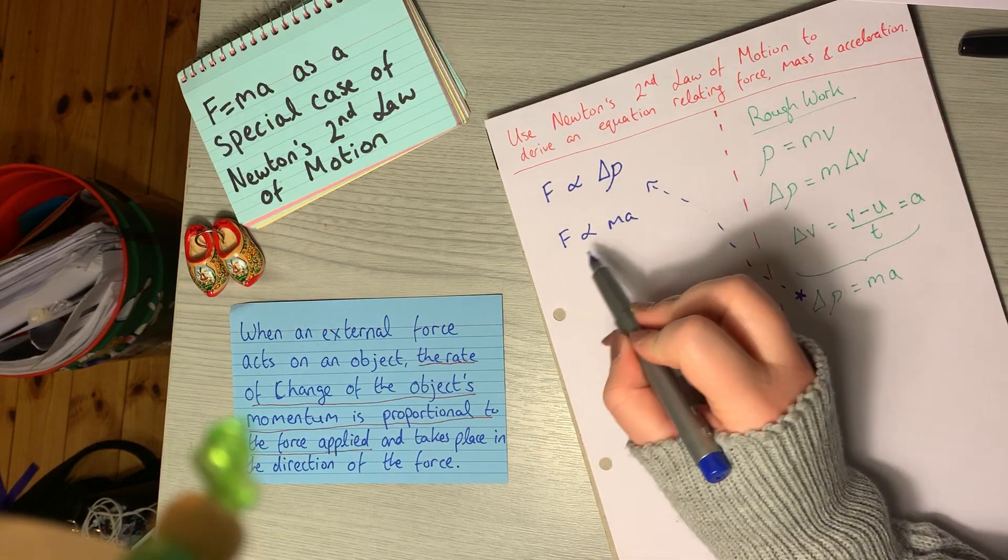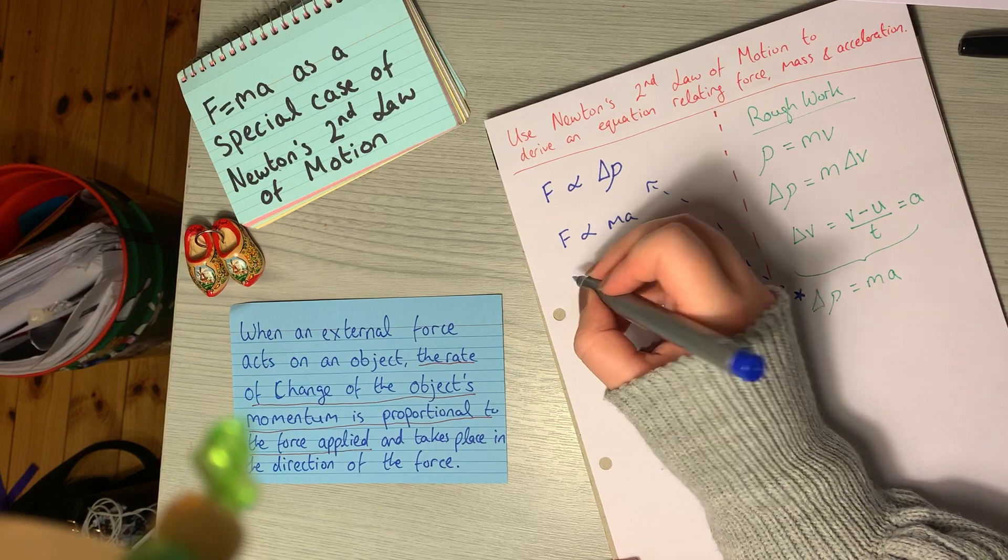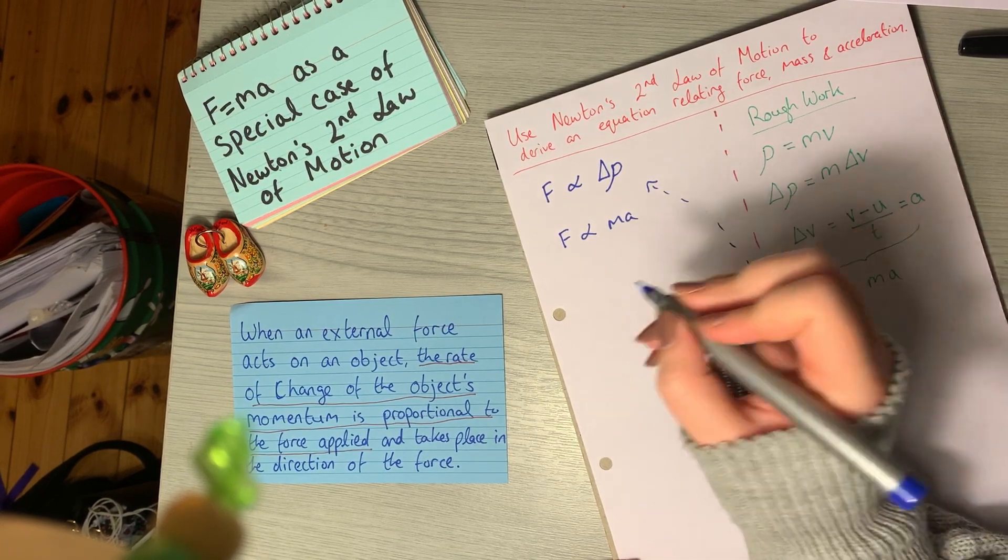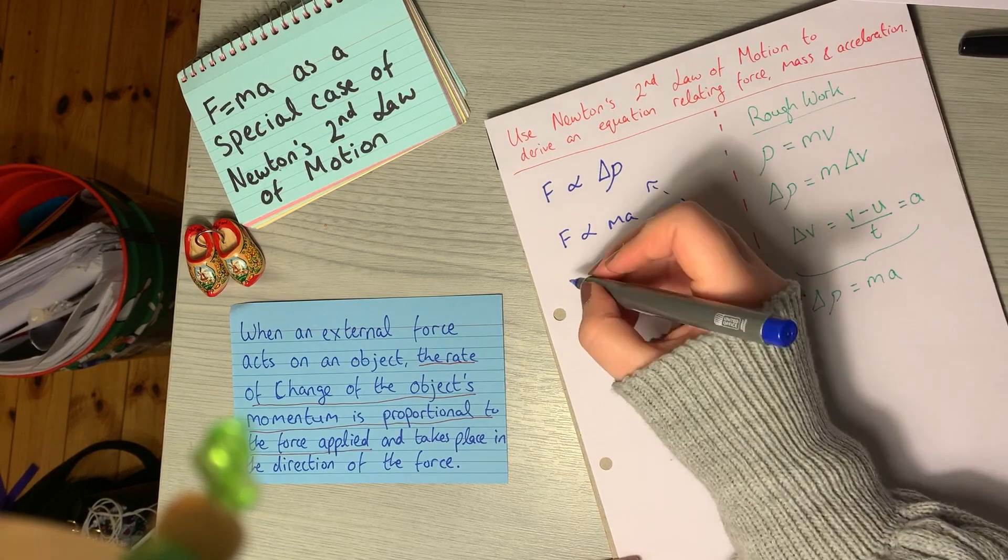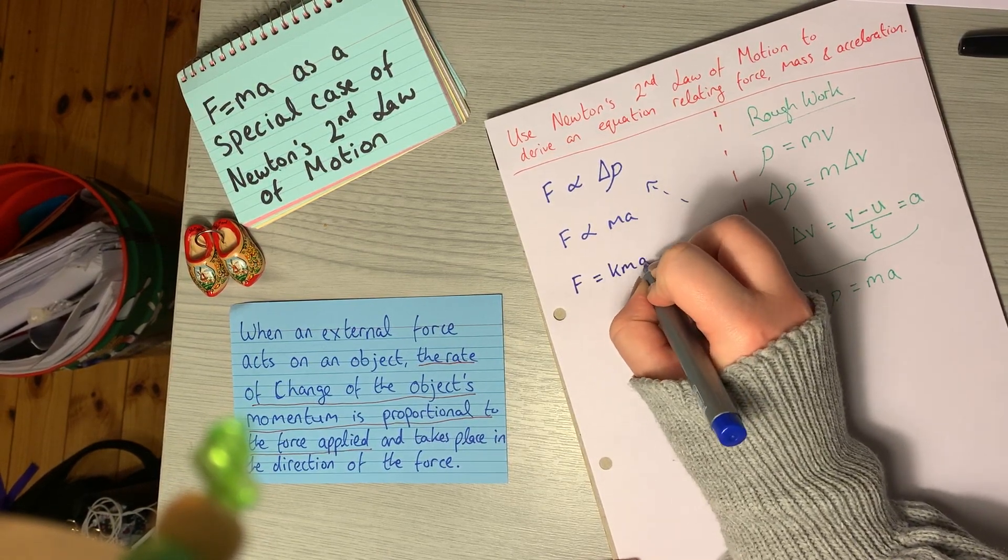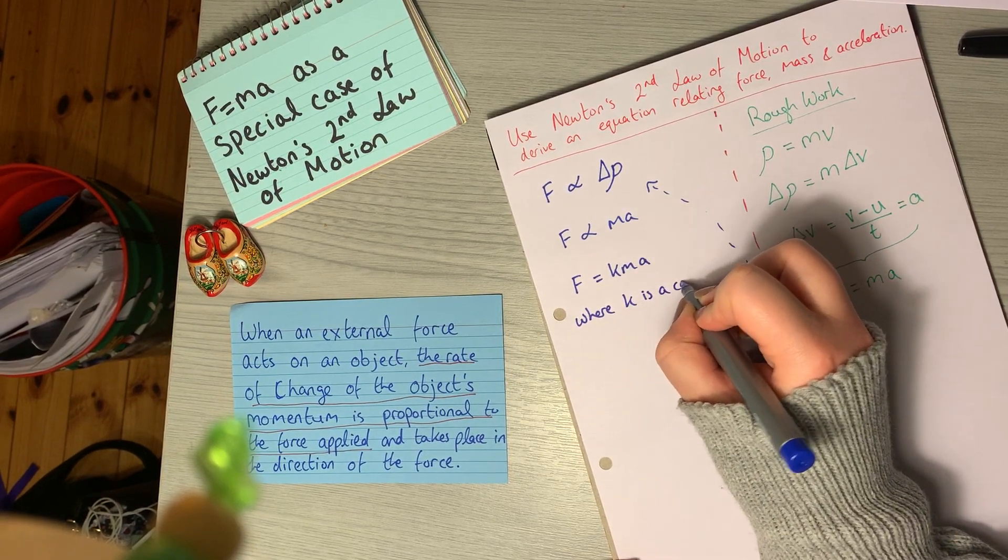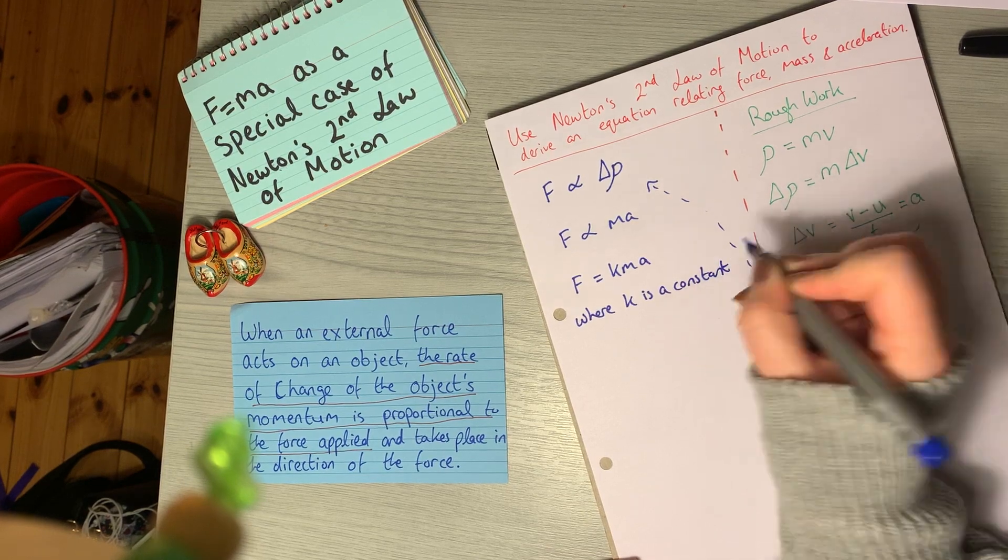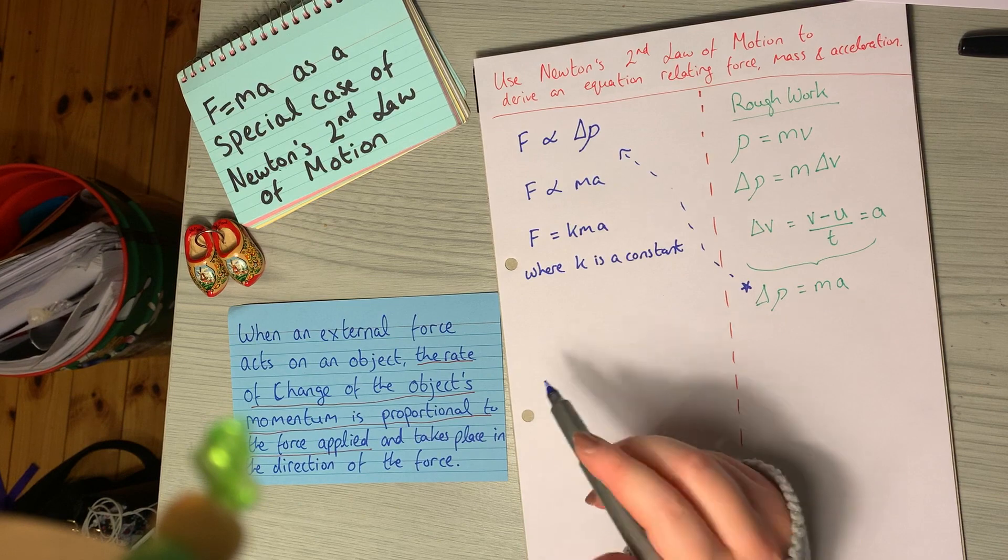If two things are proportional, they're related by a constant. That means if I multiply MA by this constant, I'm just going to call it K for the minute, that means it'll be equal to F. So we can write that as F equals KMA. And then we just need to write down here where K is a constant. We don't know what K is at the minute. That's what we're going to figure out next.